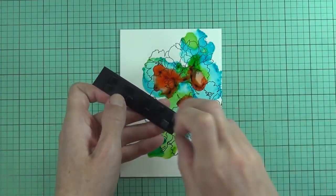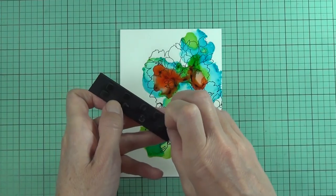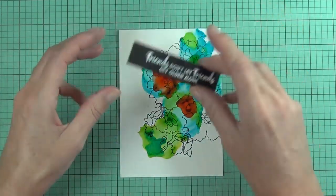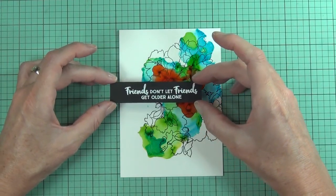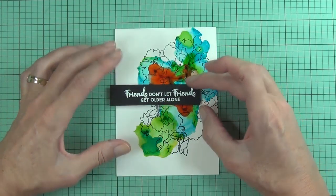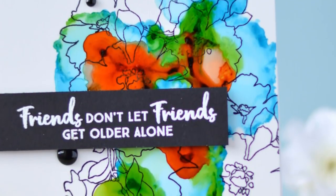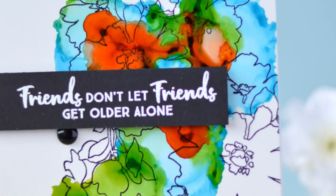I have popped my sentiment up with some black foam squares, and I did come in and add some black enamel dots as well. That's my finished card for today. I'll link everything below or you can head to my blog and find everything there. Till next time, happy paper crafting, bye.